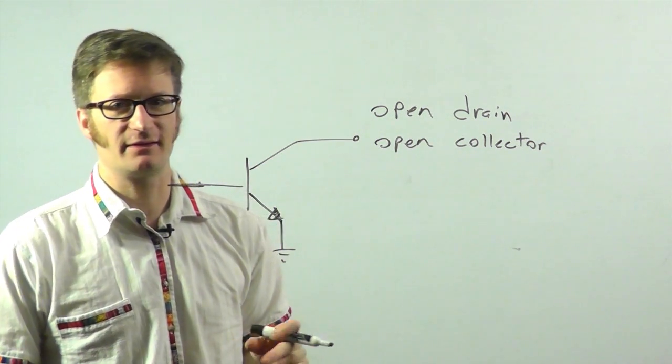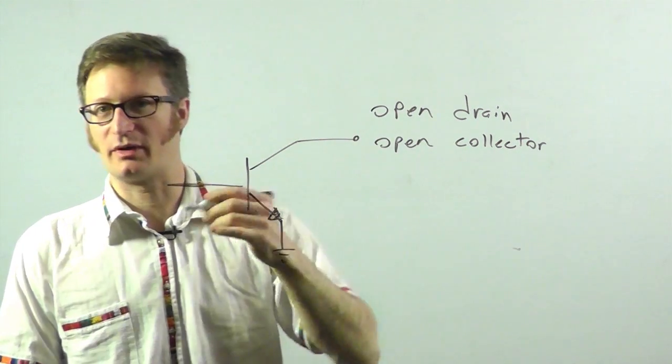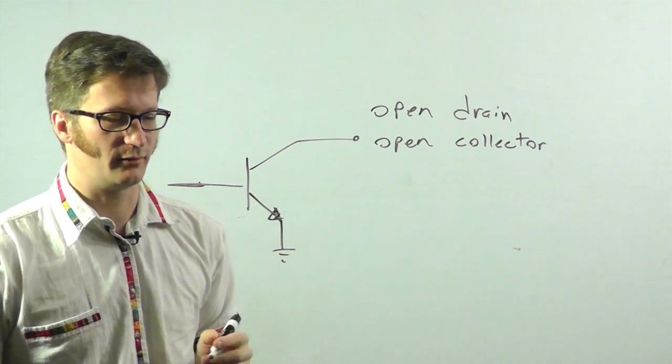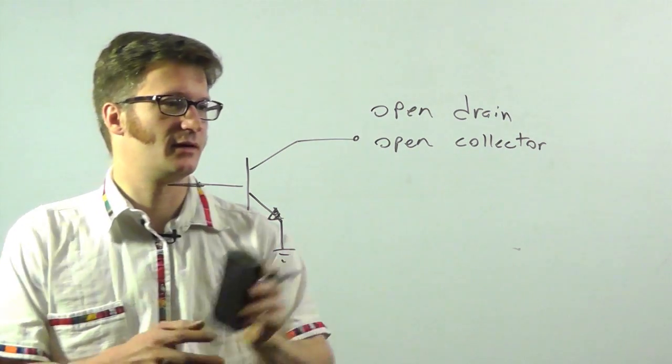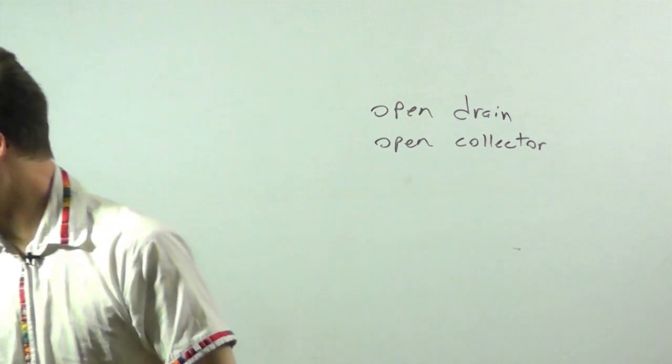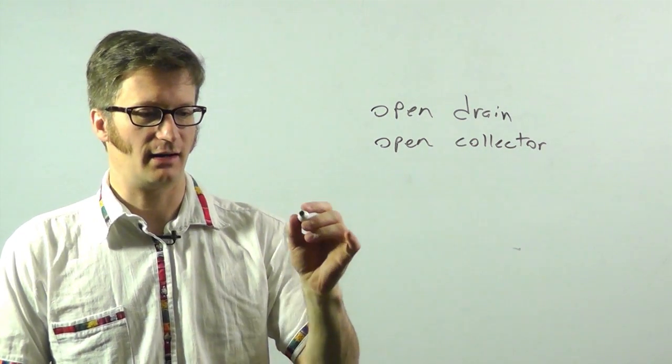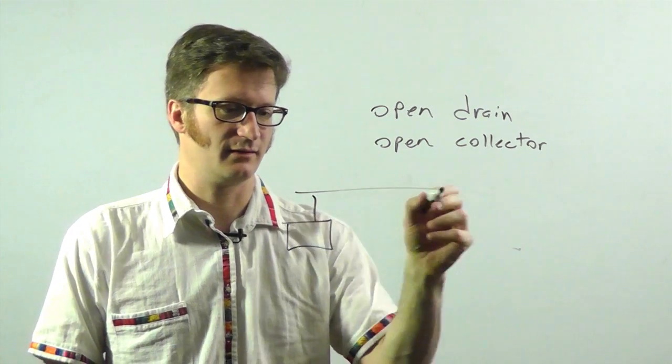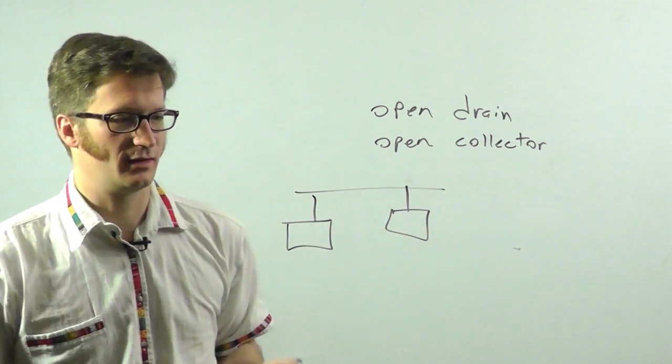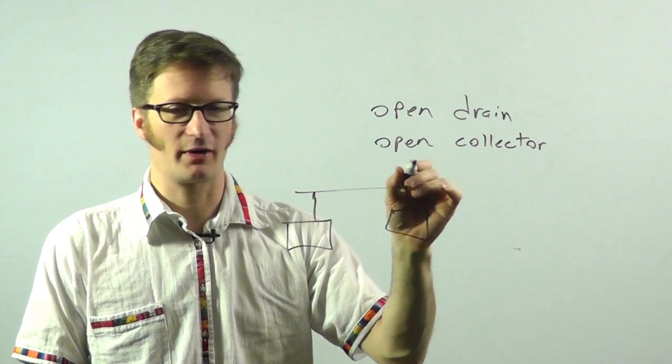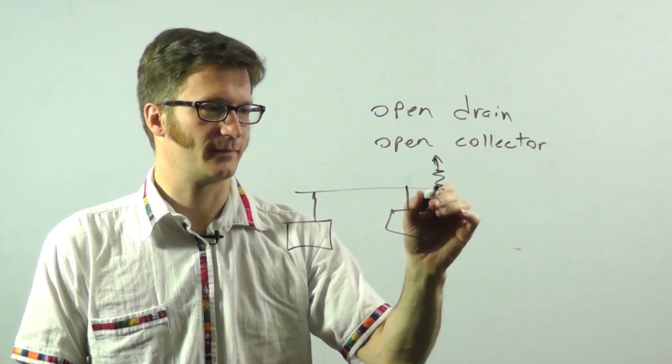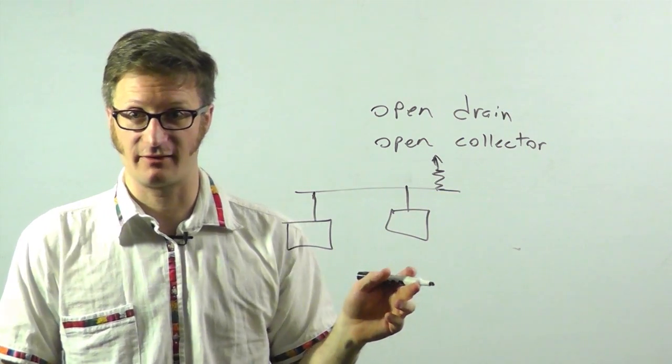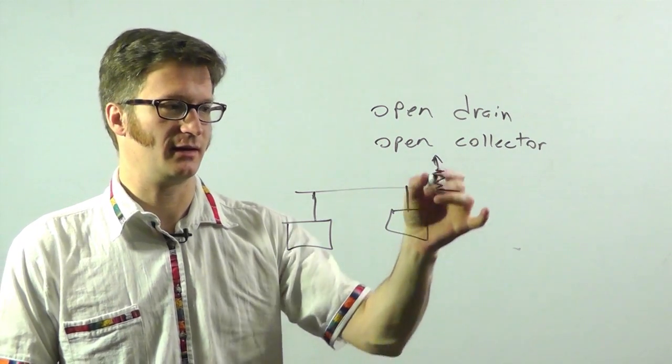So this can sink current but it can't drive it high. And that is useful in situations where you want to do what we are doing with the tri-state gate, where you have multiple things connected to one data line. So what you would do is, sometimes you'll see this on an I2C chip or SPI chip where you have multiple chips with different addresses and they all need to drive the same line. So I'll just draw two of them. And then what I end up having somewhere in the circuit, I have a pull-up resistor.